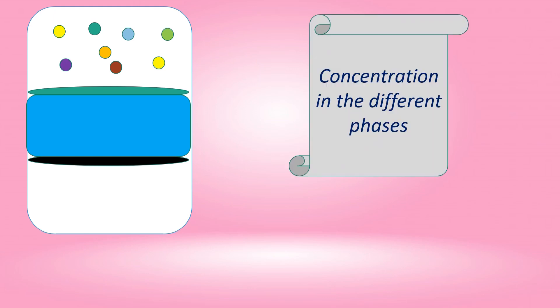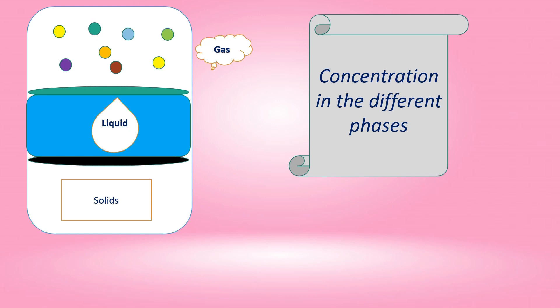Also, in a multi-phase system, fugacity represents the tendency that a substance will have to escape to another phase. So, for mass transfer phenomena, it is important to consider fugacity, as the difference in fugacity is the driving force between the phases, and at equilibrium the fugacity of all phases will be equal.